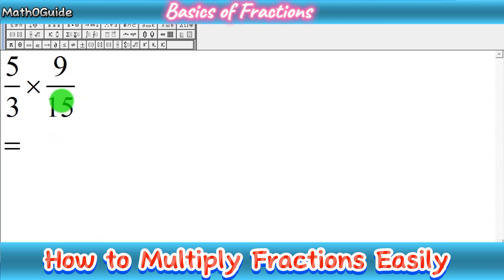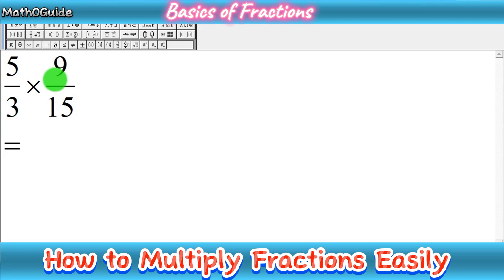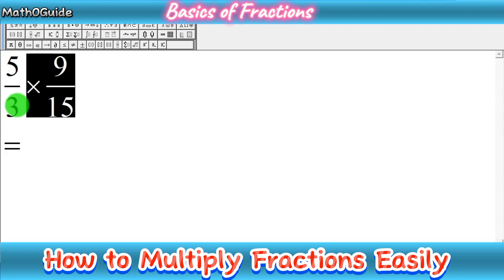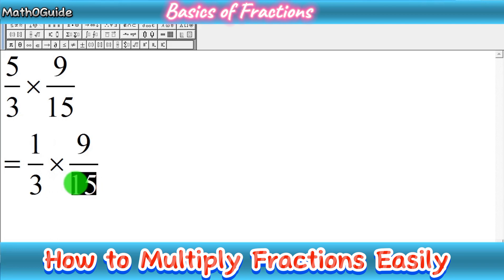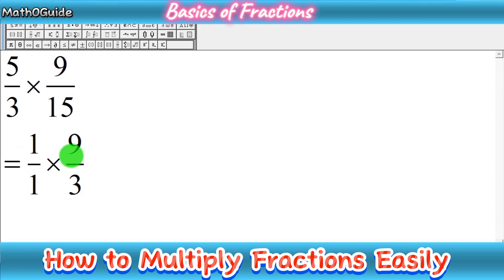In this type of question, you can cancel out the cross numbers. You can see that 5 and 15 — in the opposite direction — have a common factor, and 3 and 9 also have common factors. So you rewrite the given fractions and then cancel them. 5 times 1 is 5 and 5 times 3 is 15, so those cancel out. 3 times 1 is 3 and 3 times 3 is 9, so those cancel out too.